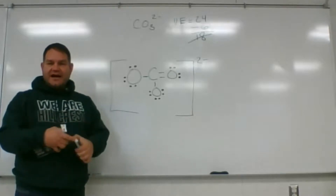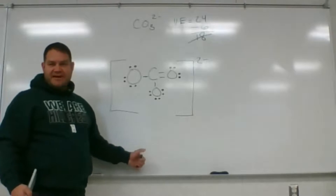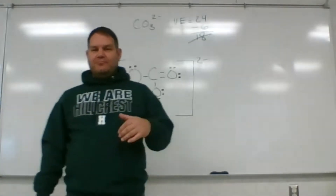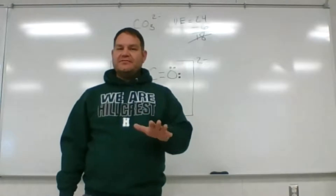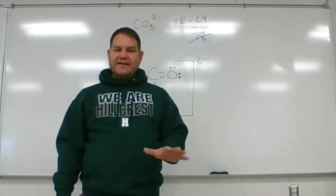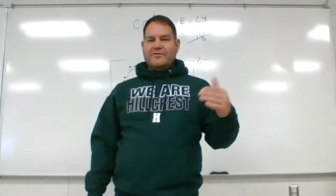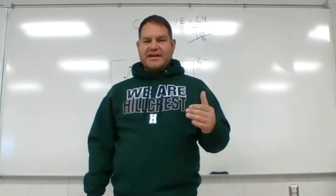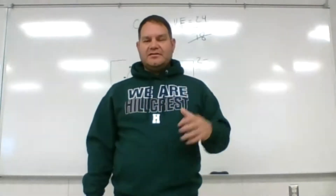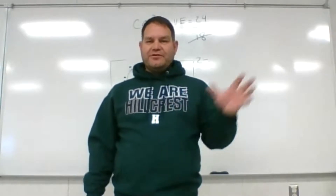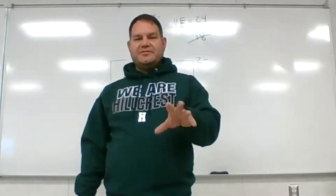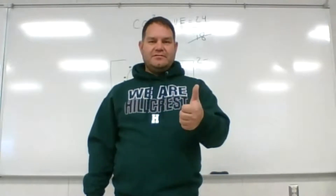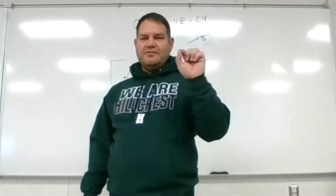The carbonate ion has the correct structure — full shells for all atoms, correct number of valence electrons, brackets, and the charge labeled correctly. You can convert the bonding dots to dash lines: a double bond and two single bonds. Now pause the video and draw Lewis structures for all the molecules in your study guide. Go through each step one at a time, then turn the video back on to check your answers.